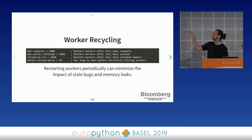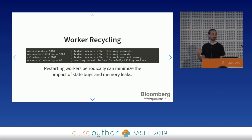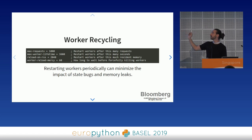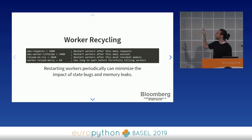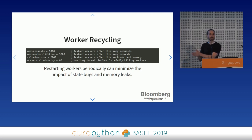The most dear to my heart is worker recycling, which makes sure your workers don't get too old. There are three metrics: max-requests restarts workers after 1,000 requests; max-worker-lifetime restarts after an hour of uptime; and reload-on-rss restarts if the process allocates more than 2 gigabytes of resident memory. All of these take effect after the current request is finished. This is very valuable for preventing slow memory leaks from becoming production problems. Obviously you should fix the leak, but there's no reason to let it cause an outage in the meantime.